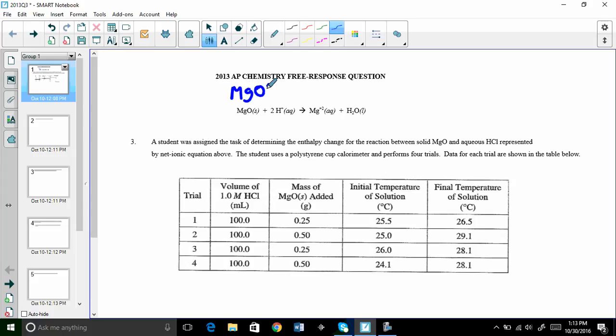MgO is a solid, and remember solids, liquids, and gases you leave alone. And then it says aqueous HCl, which is hydrochloric acid. That would turn into, because this is a double replacement, magnesium chloride and water. This is a weird equation because this is considered a basic oxide. But anyways, this is what happens and you end up needing a two here. So one magnesium, one oxygen, two hydrogen balanced.